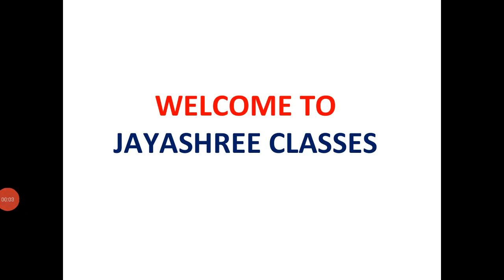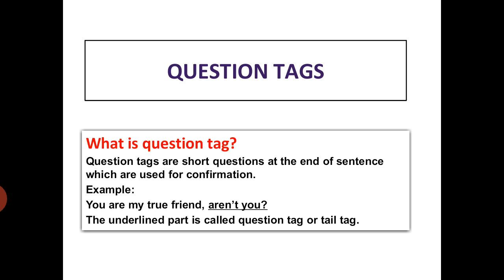Welcome to JHR classes. Let us start a video tutorial on question tags. What is a question tag? Question tags are short questions at the end of a sentence which are used for confirmation. For example, 'You are my true friend, aren't you?' In this sentence, the underlined part which is used for confirmation is called a question tag. It is also called a tail tag.